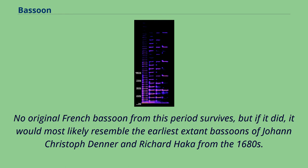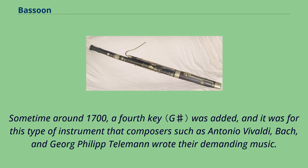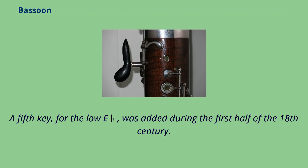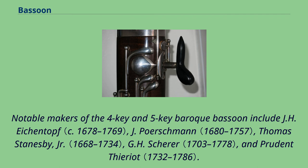Sometime around 1700, a fourth key was added, and it was for this type of instrument that composers such as Antonio Vivaldi, Bach, and Georg Philipp Telemann wrote their demanding music. A fifth key, for the low E-flat, was added during the first half of the 18th century. Notable makers of the four-key and five-key Baroque bassoon include J. H. Eichentopf, J. Poerschmann, Thomas Stanesby Jr., G. H. Scherer, and Prudentario. Increasing demands on capabilities of instruments and players in the 19th century, particularly larger concert halls requiring greater volume and the rise of virtuoso composer-performers, spurred further refinement.